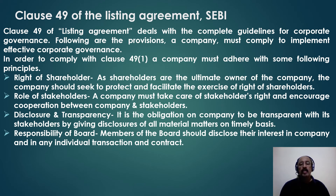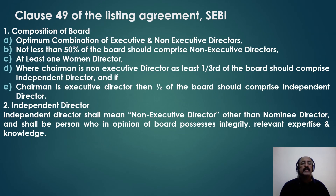Disclosure and transparency is another thing SEBI insists on — companies have to be transparent to shareholders and stakeholders by giving disclosures of all material information on a timely basis. It is also the responsibility of the board to see that all transactions and the interests of investors are resolved on time and grievances settled on time; otherwise investors can go to SEBI for clarification. Clause 49 also talks about the composition of the board: it should be an optimum combination of executive and non-executive directors, with not less than 50% being non-executive directors where the chairman is an executive director, and if the chairman is a non-executive director, 33% of the board should be independent directors. At least one woman director should also be there.